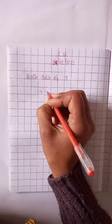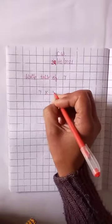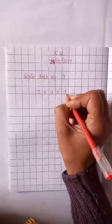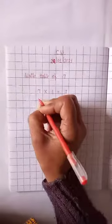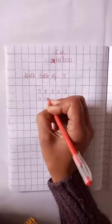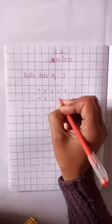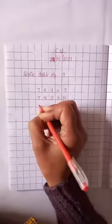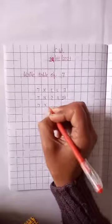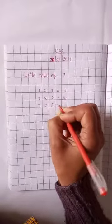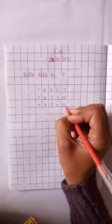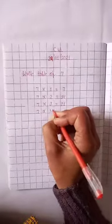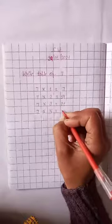7. Multiplication. 7 times 1 is equal to 7. 7 times 1, 7. 7 times 2, 14. 7 times 3, 21. 7 times 4, 28.